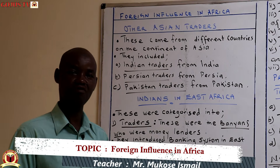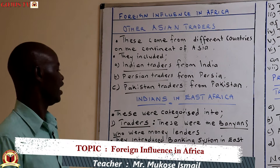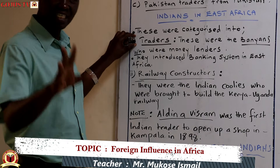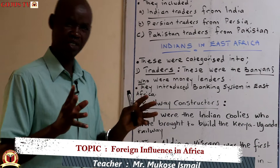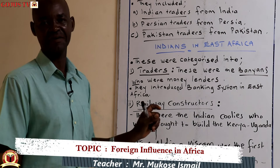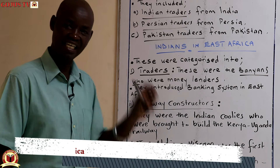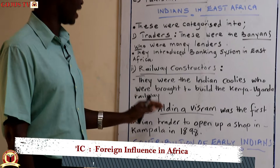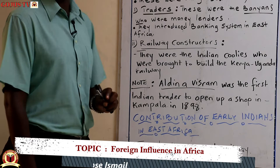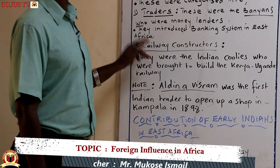To begin with the Indian traders, which shall be our center of focus in this lesson: Indians in East Africa were categorized into traders, and basically these ones were the Banianis — other people call them Banians — who were money lenders. Their major contribution was to introduce the banking system in East Africa. In P5 and P6 we talked about the Indians; the first Indian to open a shop in Kampala was Aldina Visadam, who was among the Banianis.